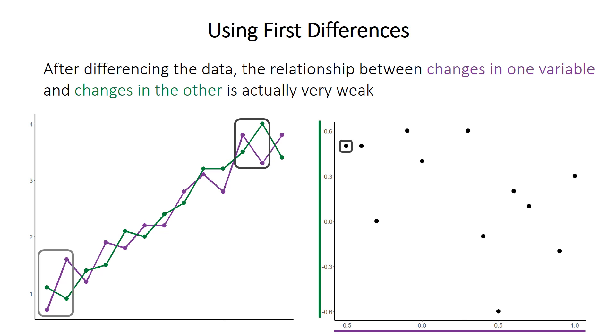In this pair, at the very beginning, the purple time series goes up by a lot and the green one goes down by a little. And so that corresponds to this point over here. A large positive increase on the x-axis for purple and a small negative increase in the y-axis for the green series. So if you look overall at these points, after doing the first differences, which is what's plotted on the right, there doesn't actually appear to be much a relationship after all.